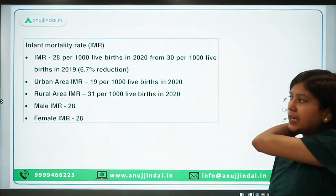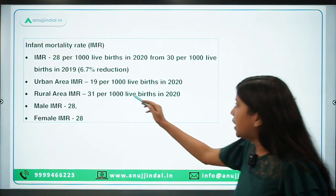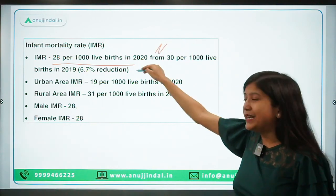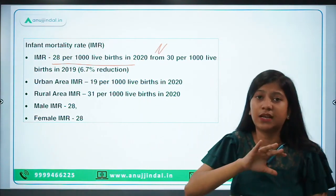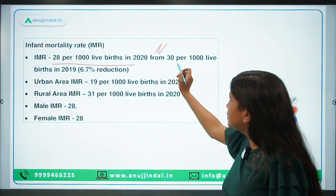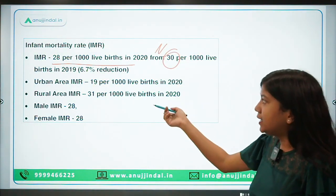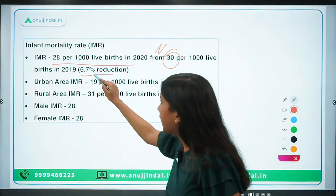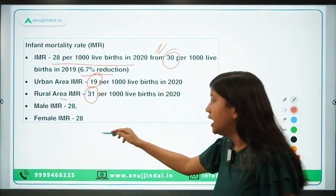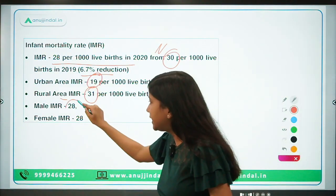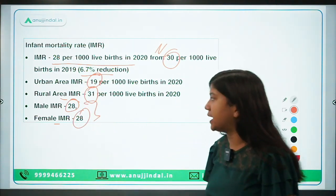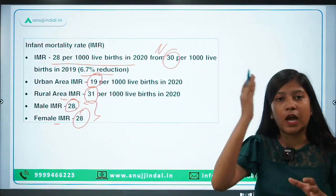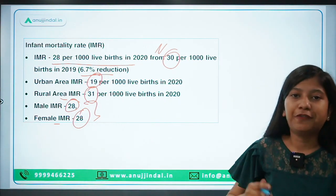Coming to the infant mortality rate: 28 per thousand live births is India's IMR, the national average, and national averages are always important. It has reduced from 30 in 2019, a reduction of 6.7%. Urban IMR is 19, rural IMR is 31. For males it is 28, and for females it is also 28 — so there is no gender disparity, but a clear difference exists between urban and rural areas.